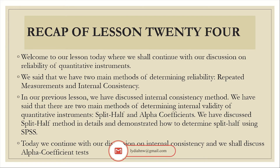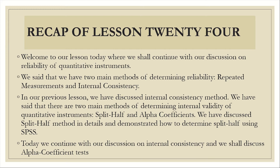As we discussed reliability in our previous lessons, we said reliability is determined using two methods: repeated measurements and internal consistency. In lesson 24, we discussed the internal consistency method. We said that under internal consistency, we either use split-half or alpha coefficients. We have discussed split-half methods in detail and even demonstrated how to determine split-half using SPSS. Today, we continue with internal consistency, where we now look at alpha coefficient tests.